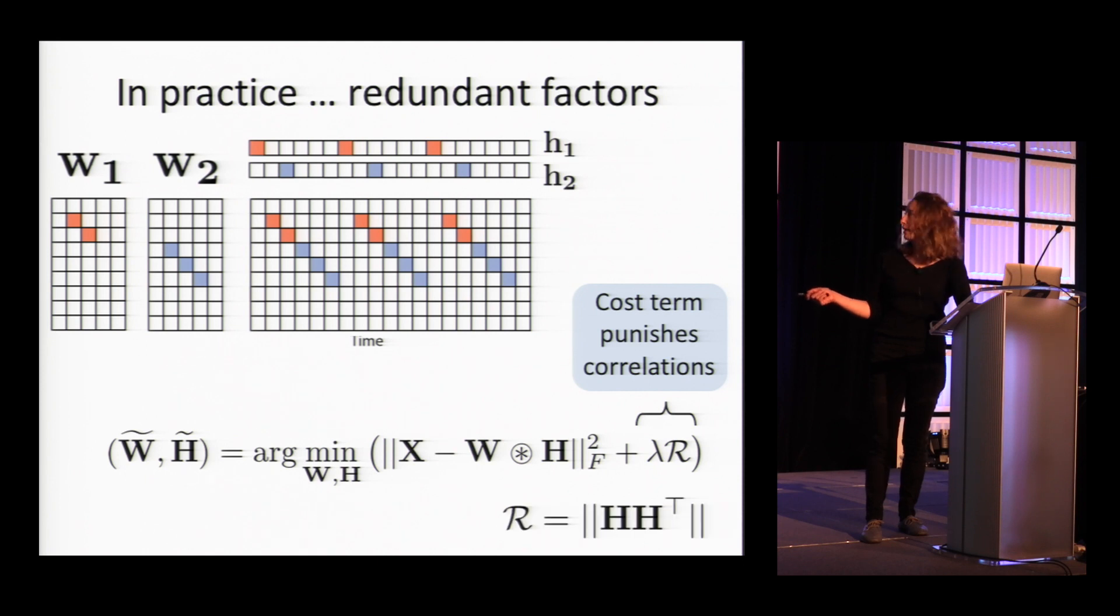The first thing that we thought of to do was punishing the correlation matrix HH transpose. This has been done in standard NMF and works pretty well. But in this case, it doesn't work because if you notice, these two time courses are correlated but at a slight temporal offset. So this term is completely insensitive to this type of correlation.